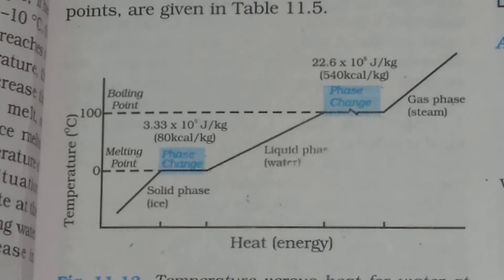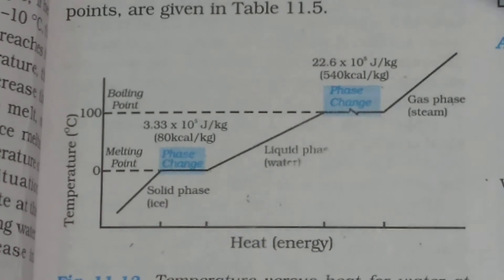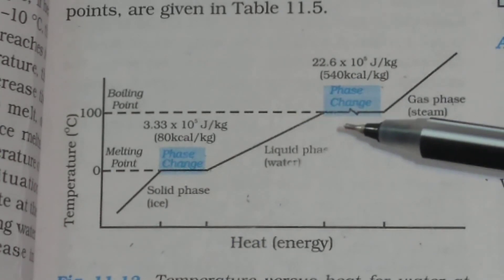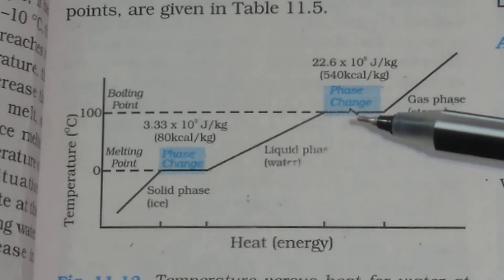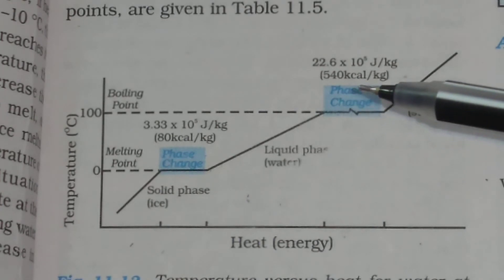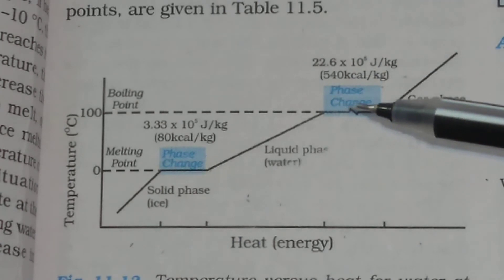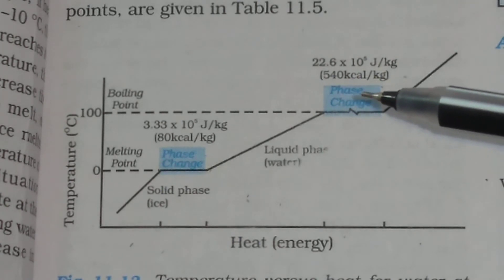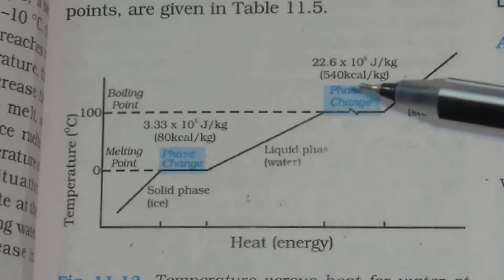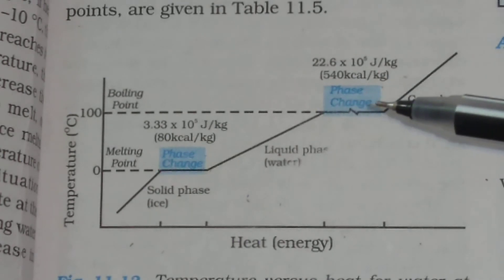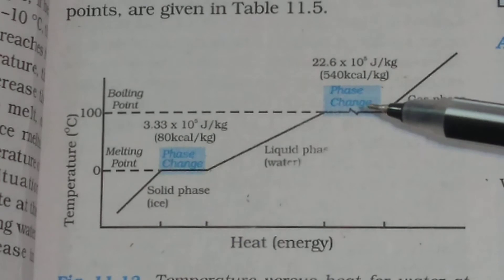This is why burns from steam are usually more serious than those from boiling water. Both boiling water and steam are at 100 degrees centigrade, but steam contains 540 kilocalorie per kg more heat compared to boiling water. That is why steam creates more severe burns than boiling water at the same temperature.